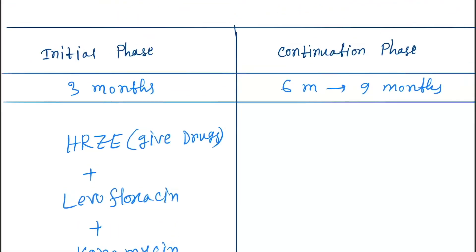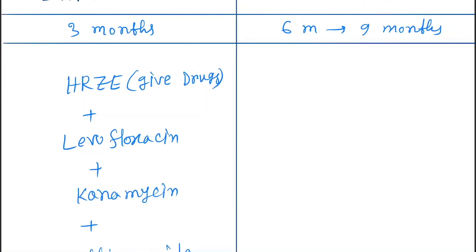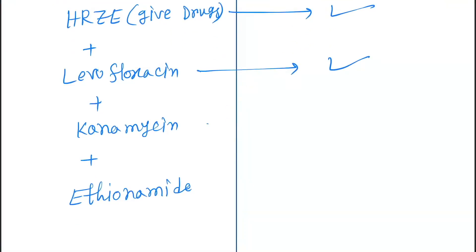In the continuation phase of polydrug resistant TB, H, R, Z, E drugs are continued along with levofloxacin. Kanamycin and ethionamide are also continued in this phase.